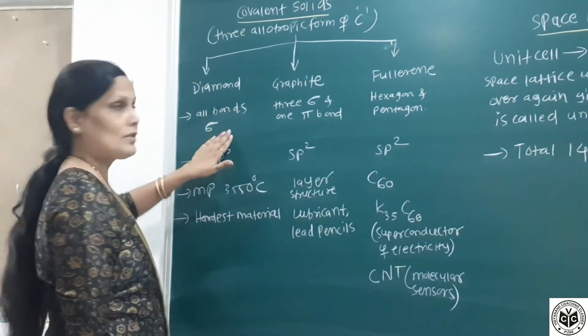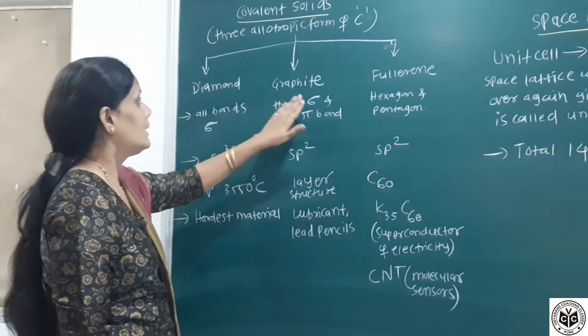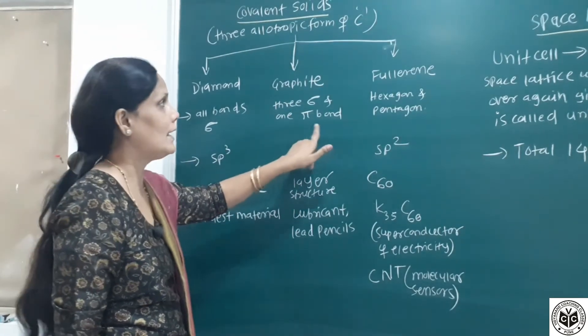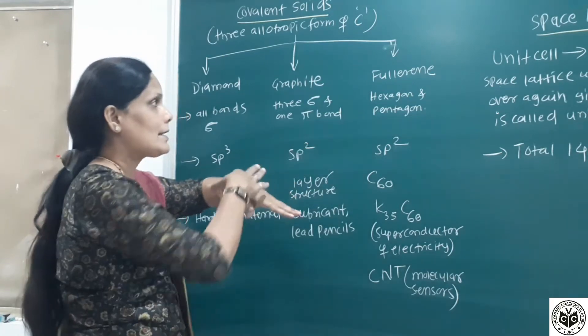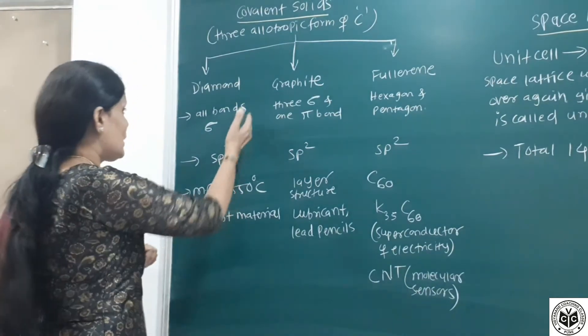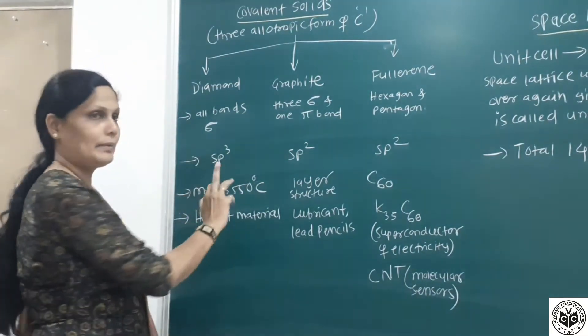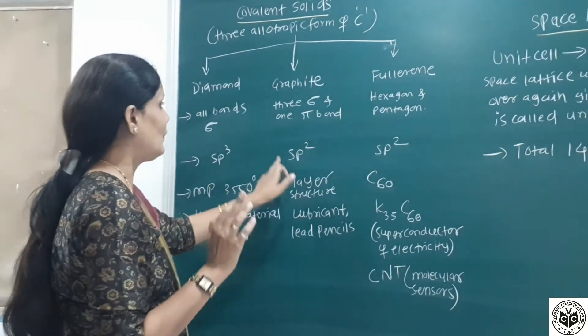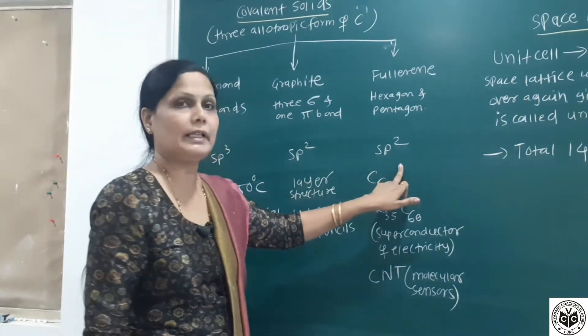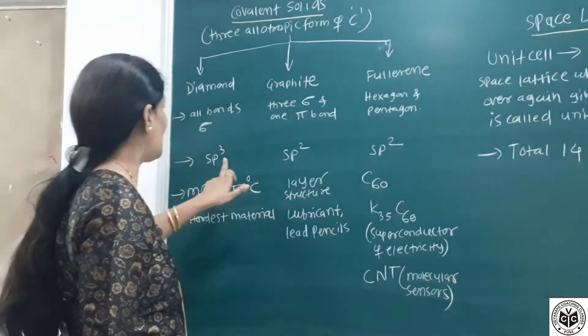In diamond, all bonds are sigma bonds. In graphite, each carbon atom is surrounded by three sigma and one pi bond. Fullerene has hexagons and pentagons situated on a soccer ball-like structure. Diamond has sp3 hybridized carbon. Graphite and fullerene have sp2 hybridized carbon. Which type of hybridization and bonds are present in diamond, graphite, or fullerene?